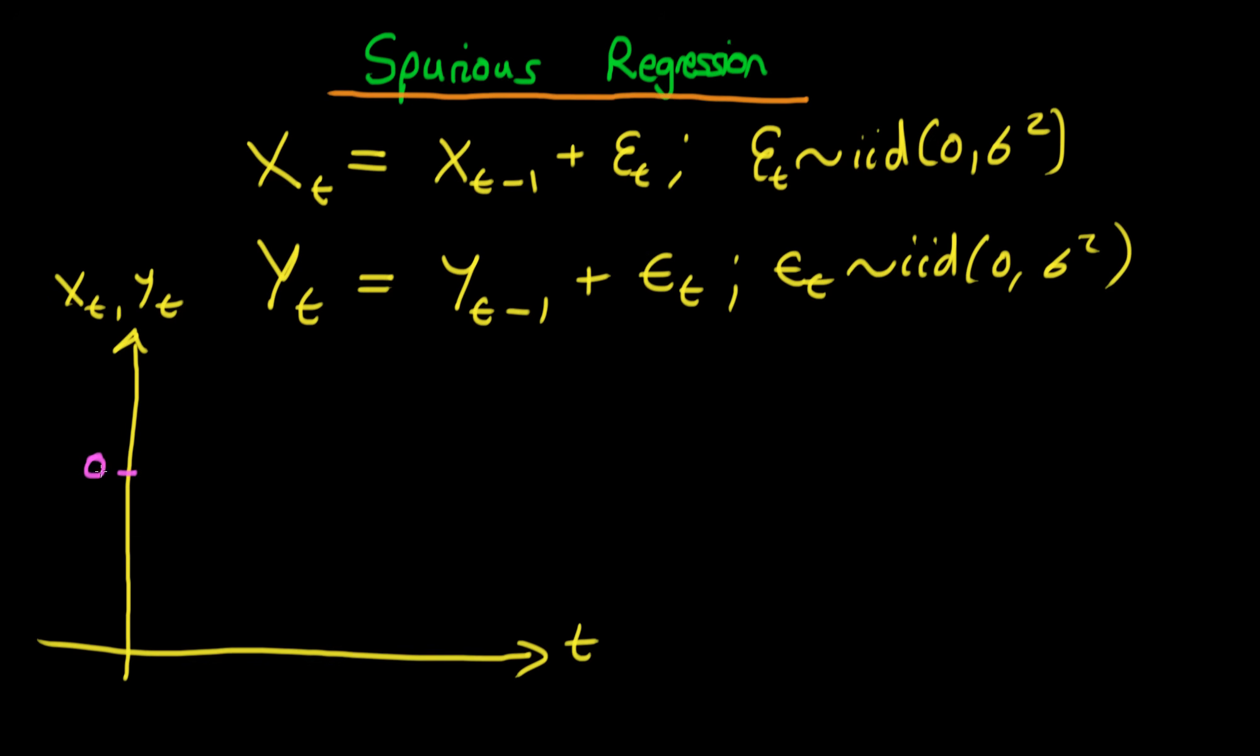then if we assume that zero is somewhere like this and we both start from the same place, then a realization of Xt might be something like that, and a realization of Yt might be, let's say, something like that. It might not necessarily look like this at all,